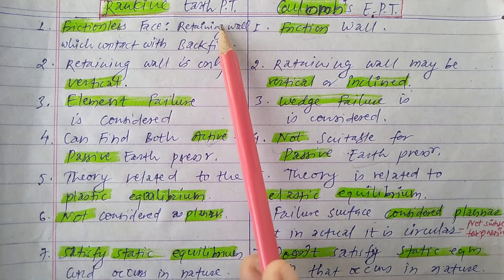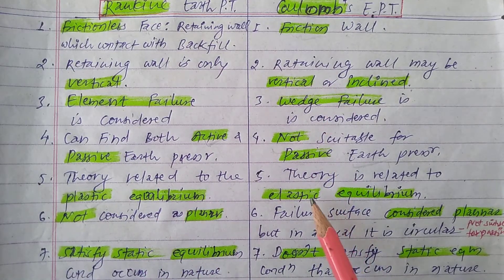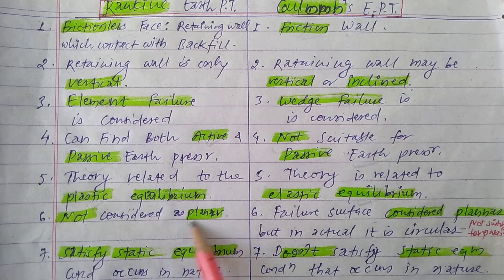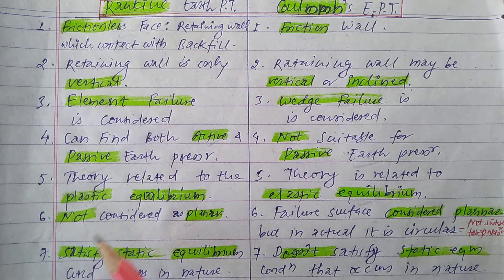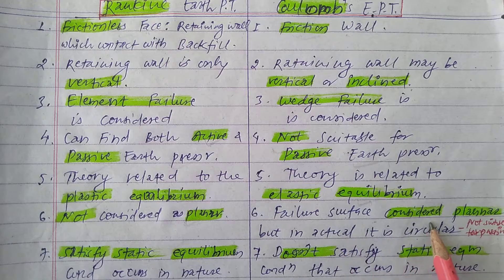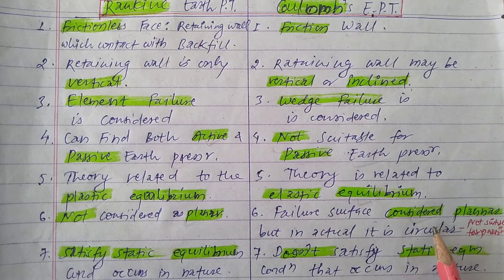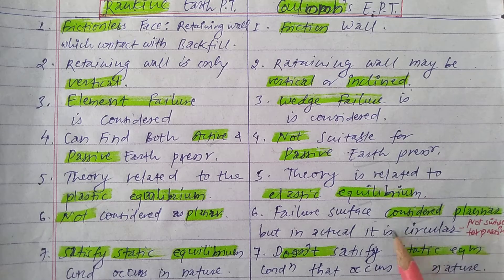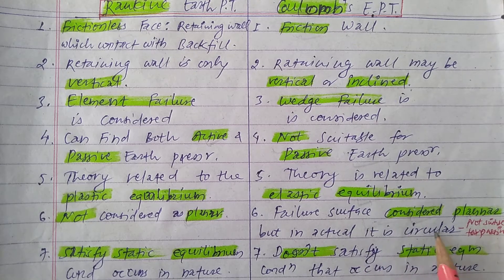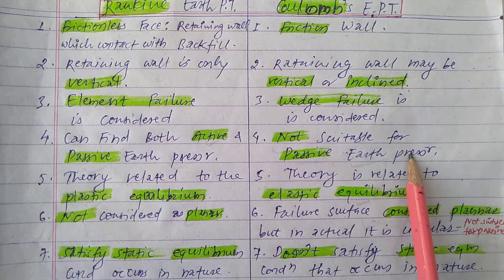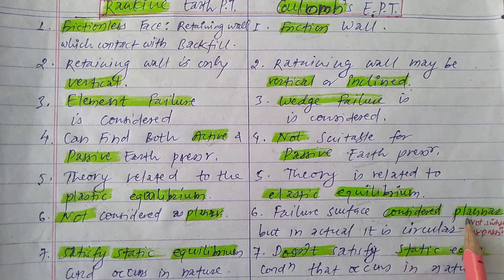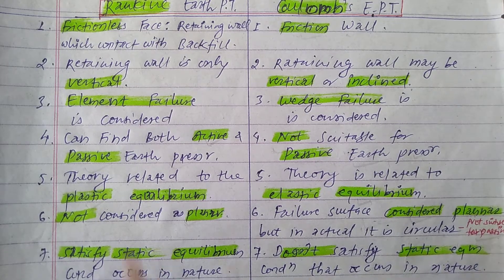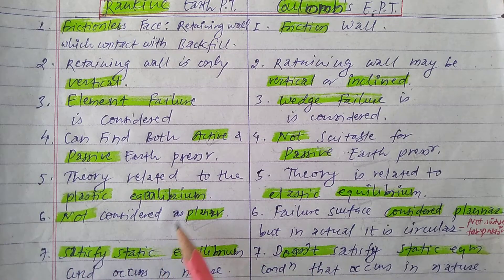Fifth difference: Rankine's earth pressure theory is related to plastic equilibrium, but Coulomb's earth pressure theory is related to elastic equilibrium. Sixth difference: in Rankine's earth pressure theory, the failure surface is not considered as planar. But in Coulomb's earth pressure theory, the failure surface is considered as planar — even though in actual conditions, the failure surface is circular in nature. That is why Coulomb's theory is not suitable for the passive case.